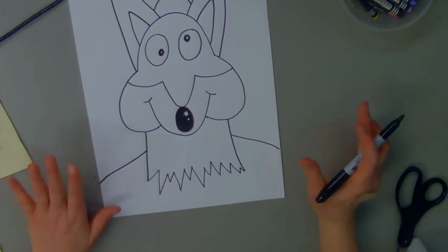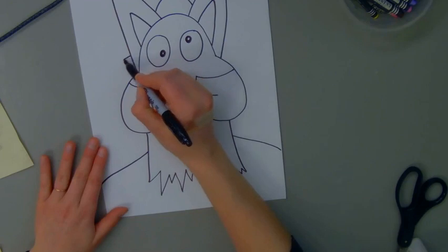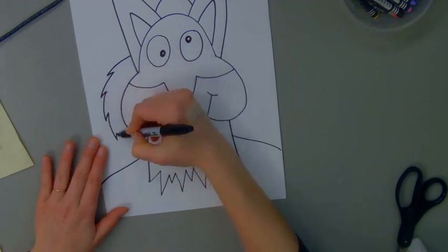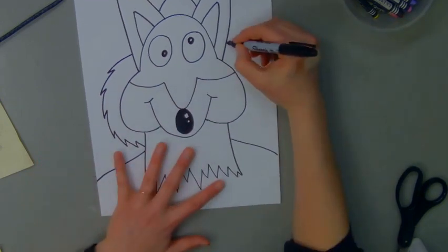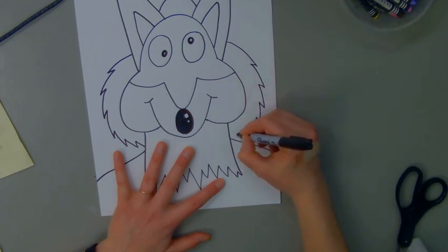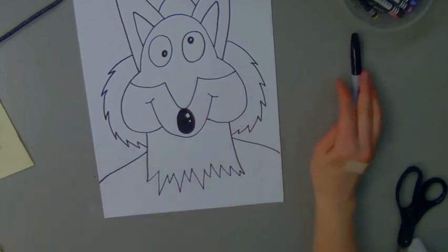Next, I'm going to draw the fur around the sides of his cheek. So I'm going to start kind of near the bottom of the ear here, and I'm going to draw a zigzag line that goes all the way around the cheek without touching and connects to his neck. I'll repeat that step on the other side. All right, our Casey Wolf drawing is complete. And now we just need to color him.